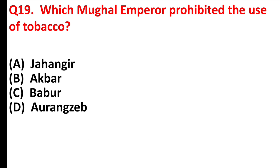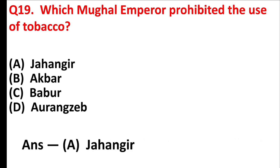Which Mughal emperor prohibited the use of tobacco? Answer is option A: Jahangir.